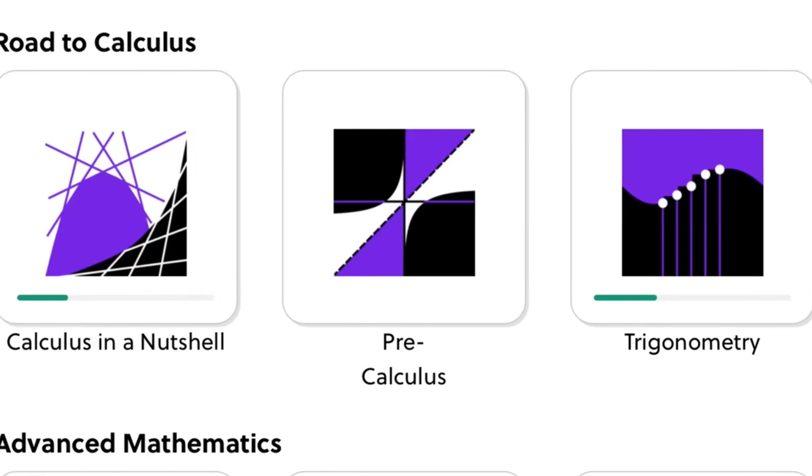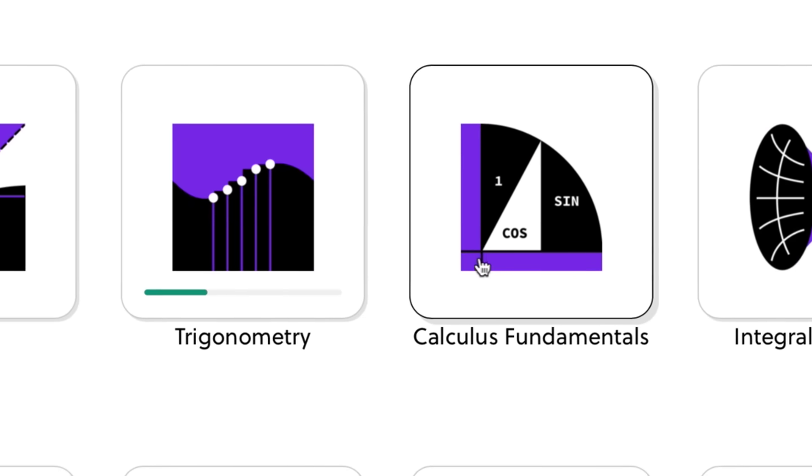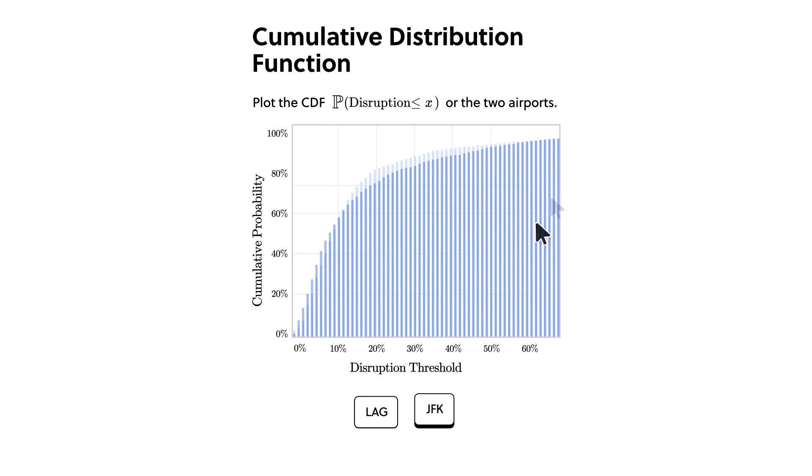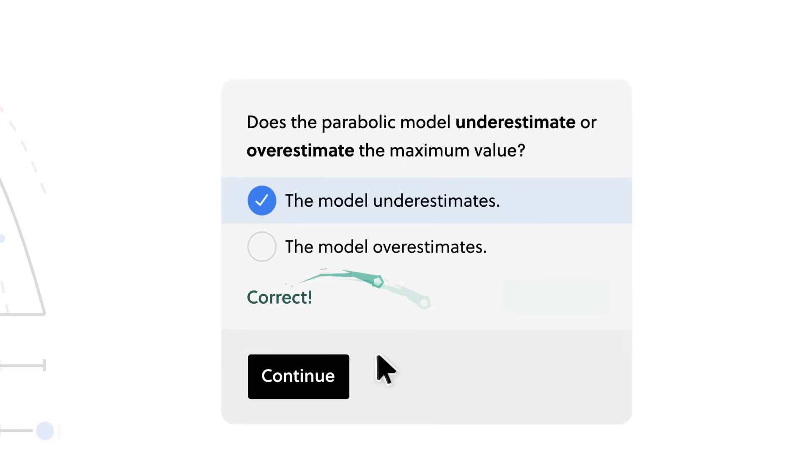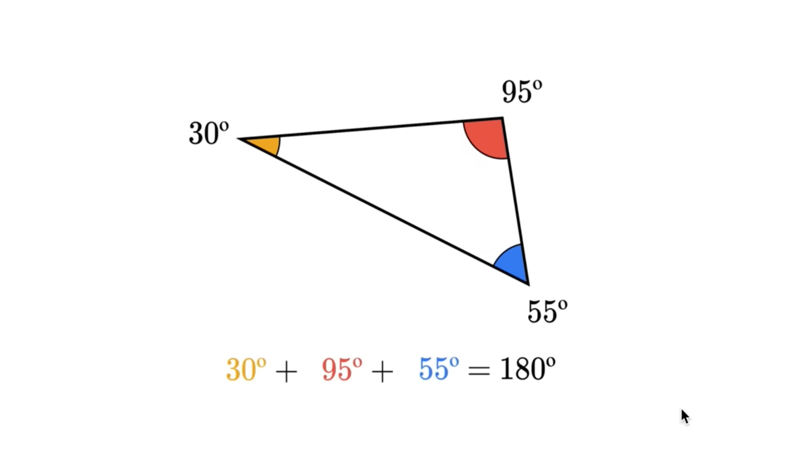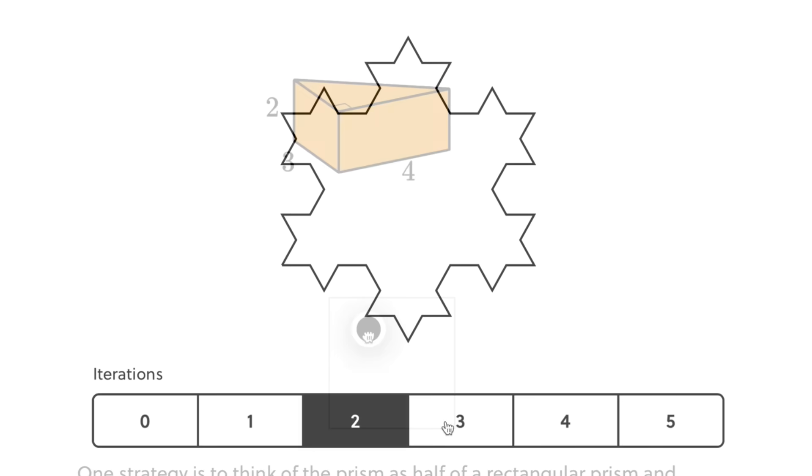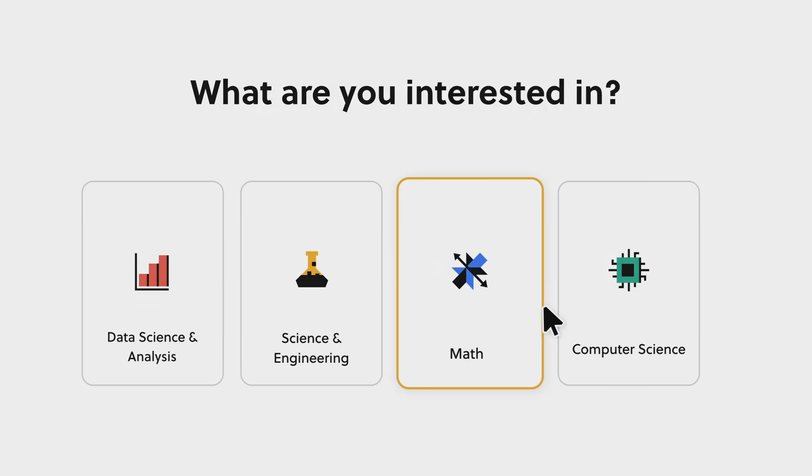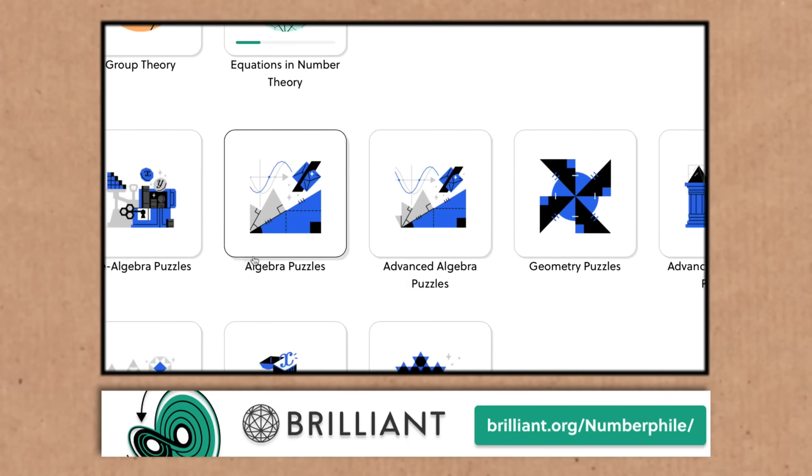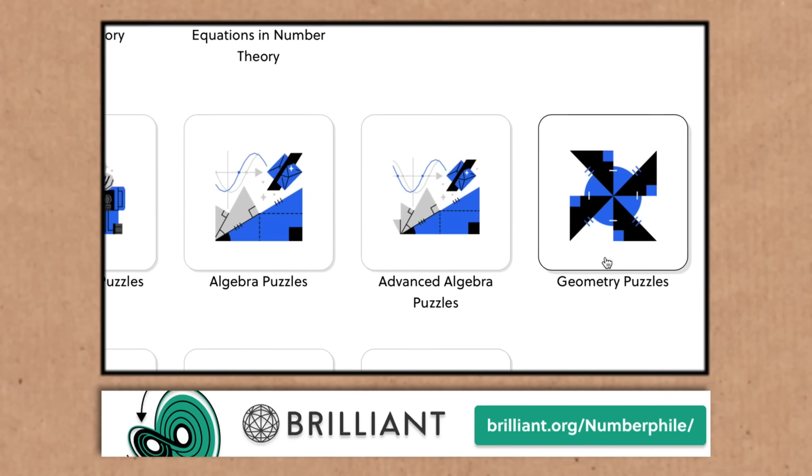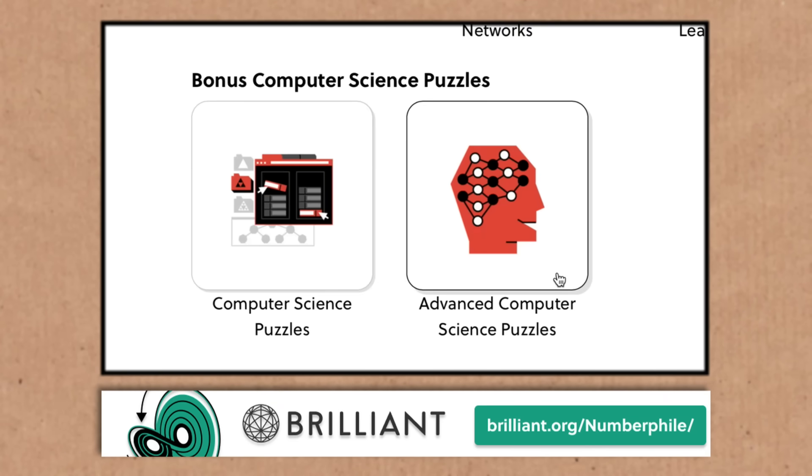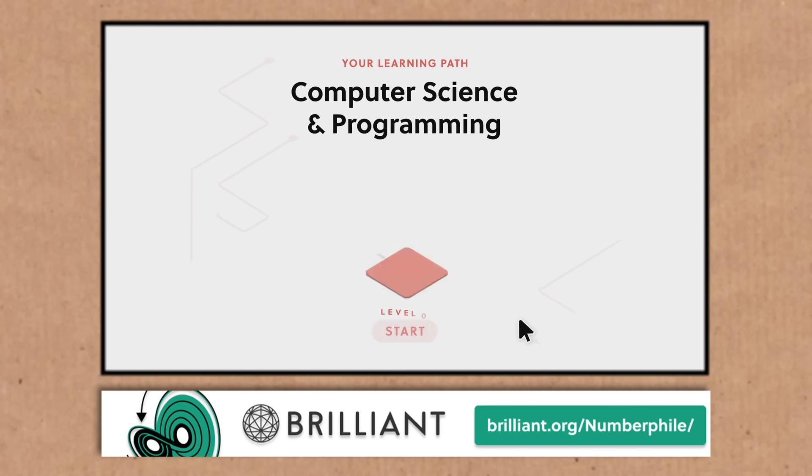Now, if expanding your mind is something you'd like to do, well, brilliant.org is the place to do it. This is an absolute smorgasbord of courses, quizzes, and curated content. It's all interactive, very clever. It's designed to make you smarter. Whether it's mathematics, computer science, chemistry, physics, you name it, they've got you covered. It's fun. It's smart. It's created by people who know their stuff.